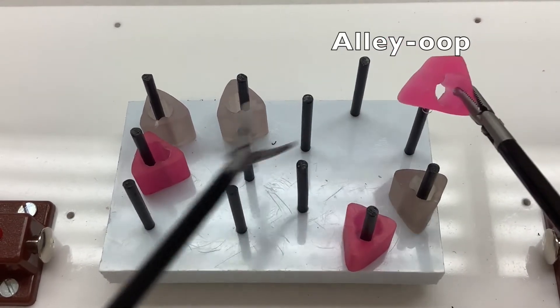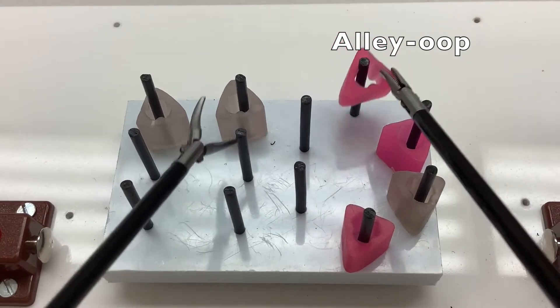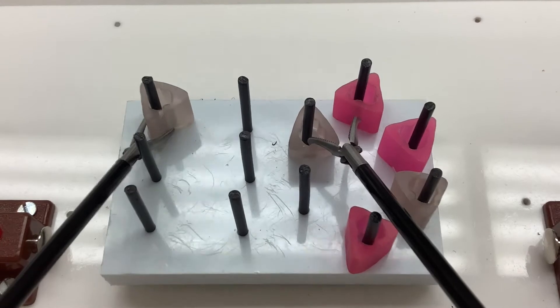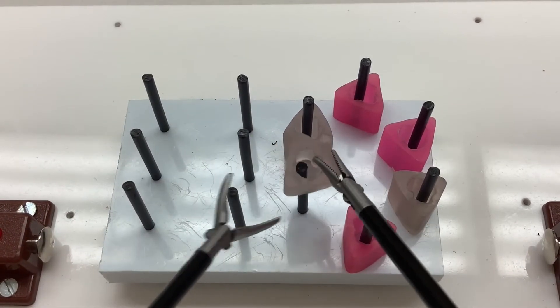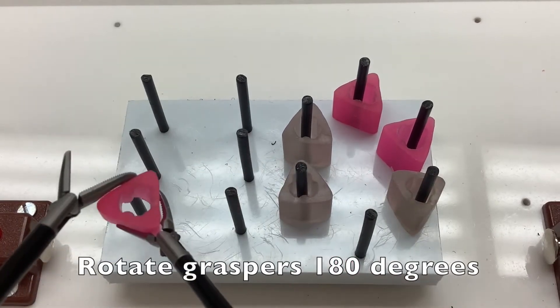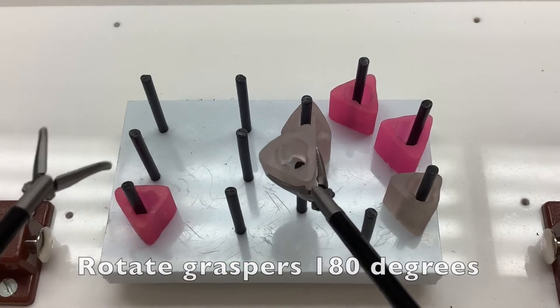The receiving hand then needs to only dunk the object over the peg and then moves to the adjacent peg. This enables the examinee to focus on the transferring hand, which promotes the simultaneous use of both hands and maximizes efficiency. After the first set of transfers, we rotate the Maryland Graspers 180 degrees and repeat the process.